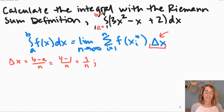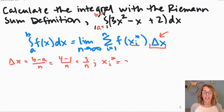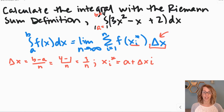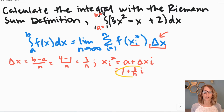We also need to figure out x sub i star, our sample point. For the definition, we're going to use right-hand rectangles, which means we start at the beginning of our interval and add the widths to get to each value. So we take a and add delta x times i. In terms of this problem, a is 1, delta x is 3 over n, giving us x sub i star equals 1 plus 3i over n. We'll plug both of these into our summation.